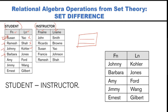Barbara is not in the second table, so include her. Emmy is also not there, so include Emmy. Jimmy is also not there, so include Jimmy. Ernest is also not there, so include Ernest. So from student minus instructor, you have taken: Johnny, Barbara, Emmy, Jimmy, and Ernest.